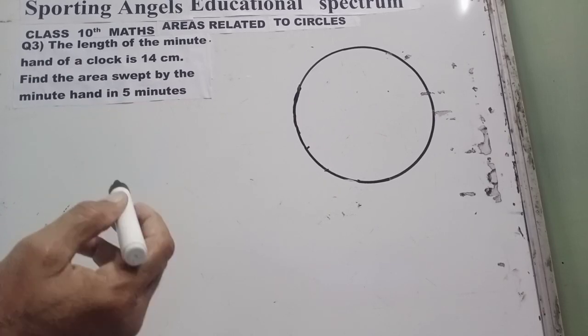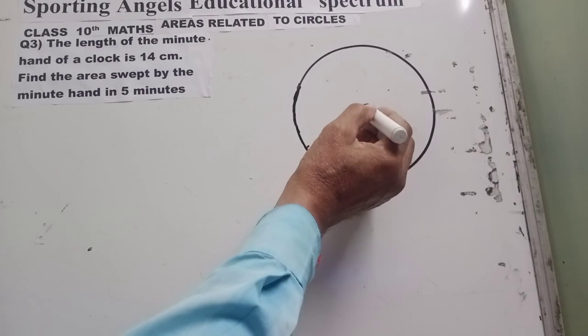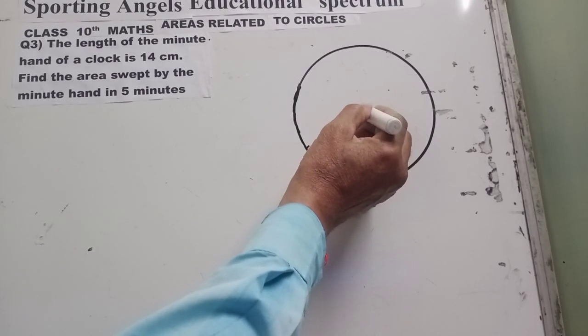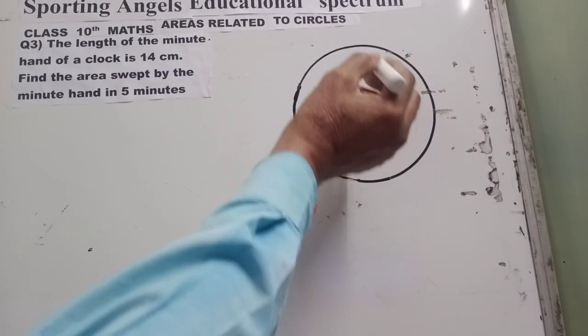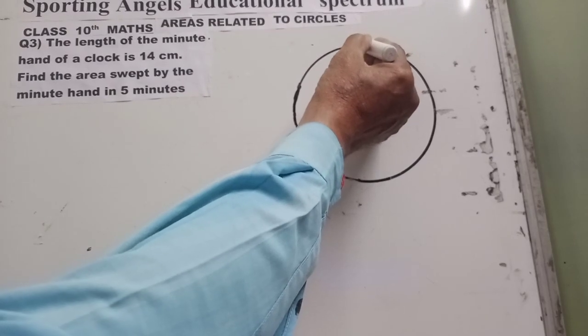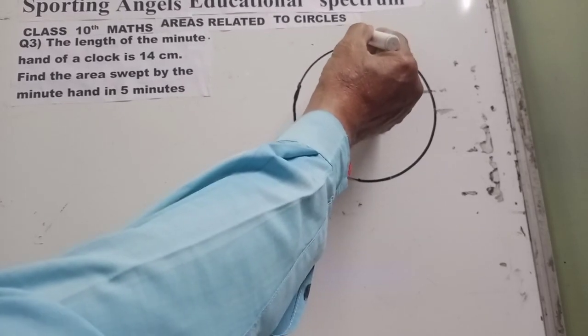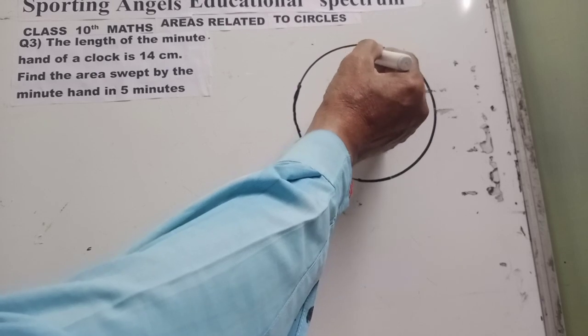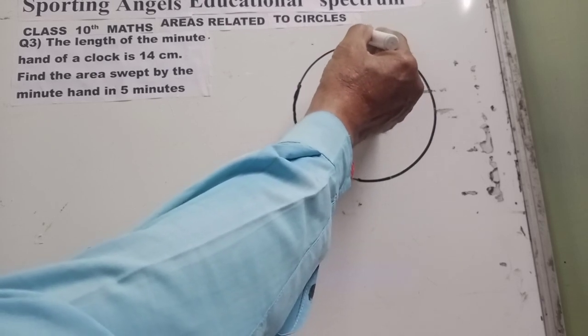Let me draw the minute hand for you. Somewhere, if we are here, we will be 12. Let me mark this as 12.